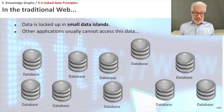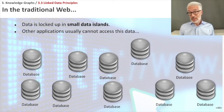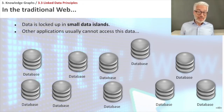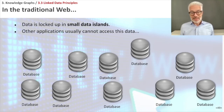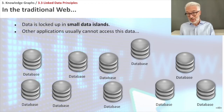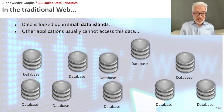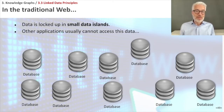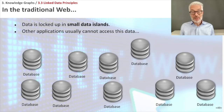What followed in the traditional web was that all of these independent databases, although connected to the web, became like small data islands. Data was locked up in these islands and other applications did not have direct access to it. For example, an e-commerce shop usually doesn't have direct access to the Google search index. The only way to access another database is through these proprietary APIs, and maintaining APIs over a long time can cause significant maintenance costs.